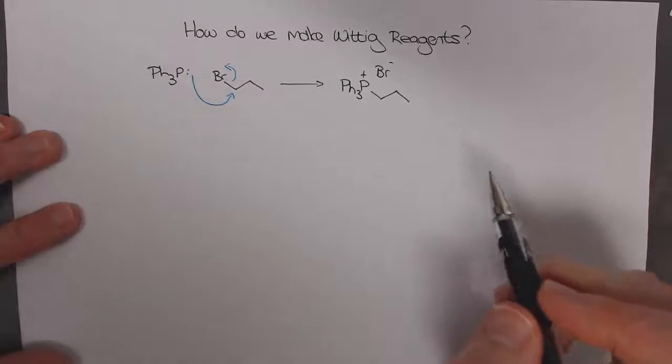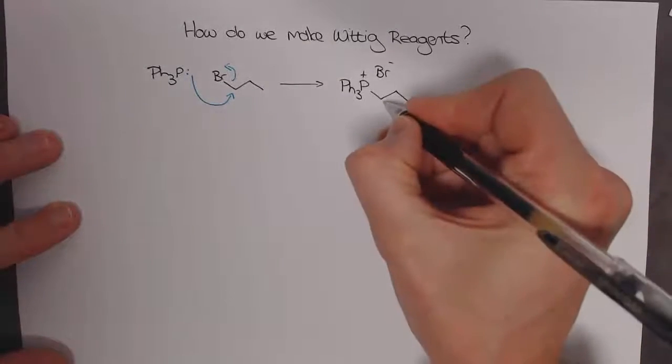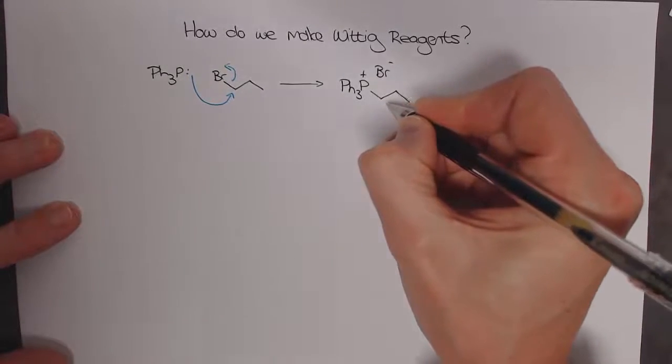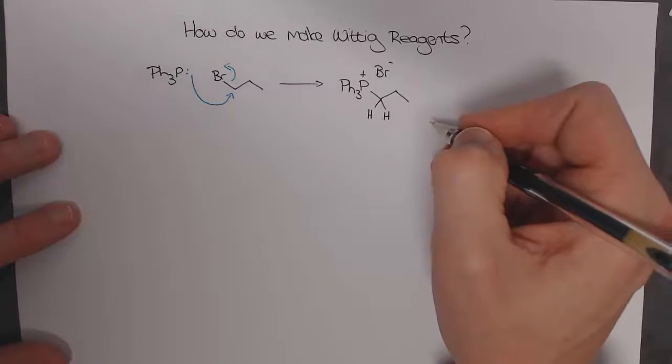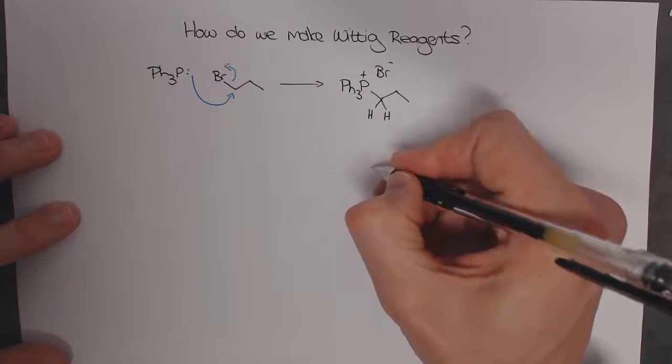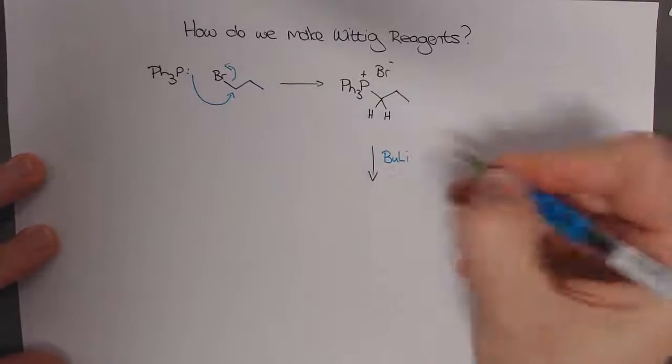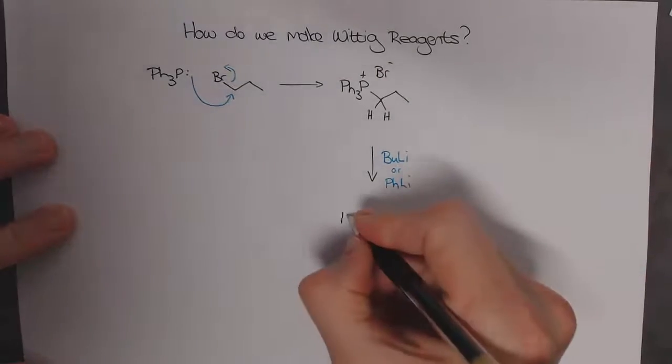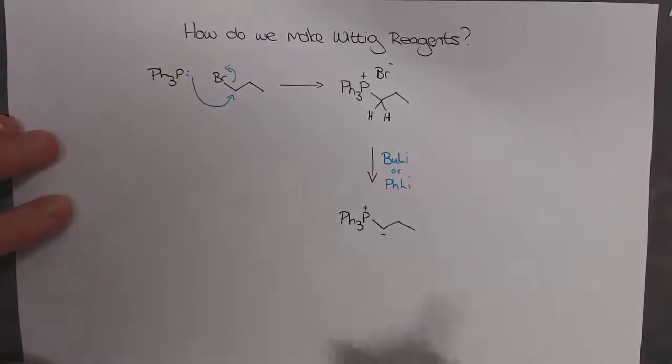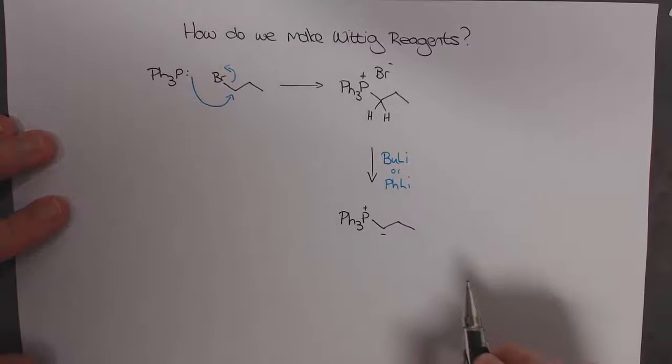The Wittig salt is now a stable salt that we can isolate and use but it's still not the reagent we want. In order to get the ylid with the negative charge, we need to deprotonate it. We need to pull that proton off with a strong base. Typical ones we might use would be butyl lithium or phenyl lithium. When we do that we get the Wittig ylid that we would form in situ and react with our aldehyde to spontaneously form the double bond.